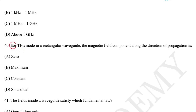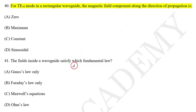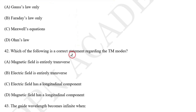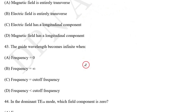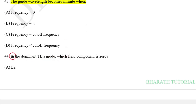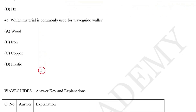Question number 40: For TE10 mode in a rectangular waveguide, the magnetic field component along the direction of propagation is? Question number 41: The field inside a waveguide satisfies which fundamental law? Question number 42: Which of the following is a correct statement regarding TM mode? Question number 43: The guide wavelength becomes infinite when? Question number 44: In the dominant TE10 mode, which field component is zero? Question number 45: Which material is commonly used for waveguide walls?